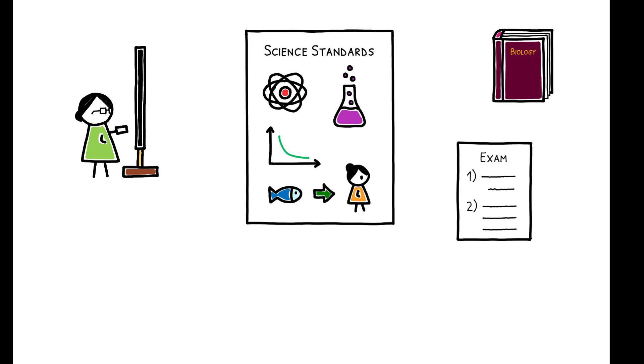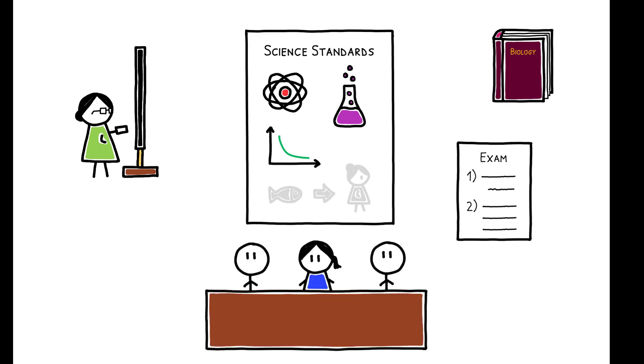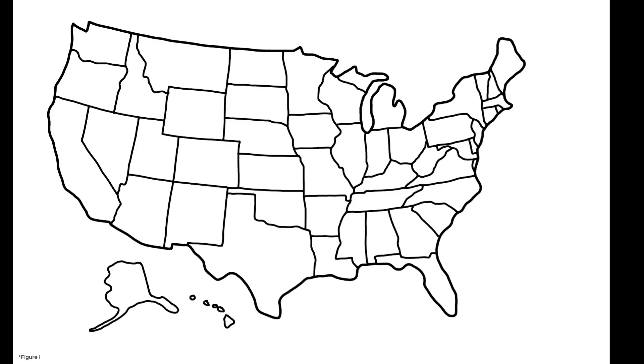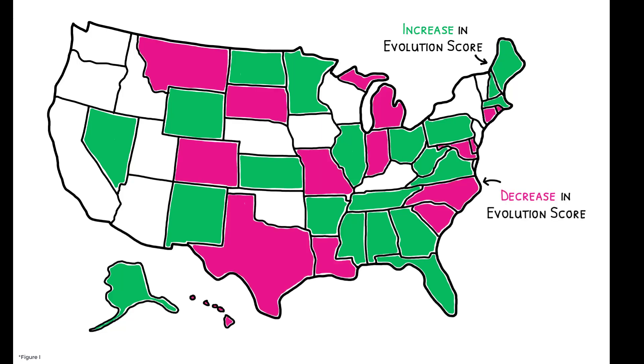Standards also determine the materials tested on statewide standardized exams. A state's standards can be reformed via a majority vote of its Board of Education, and this paper focuses on instances between 2000 and 2009 when a reform either increased or decreased a state's coverage of evolution.